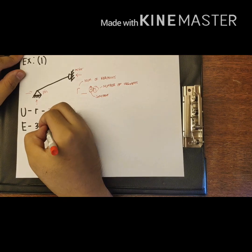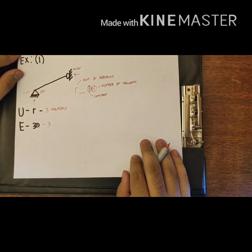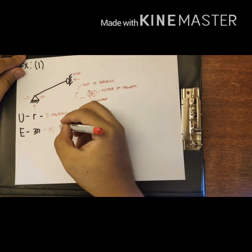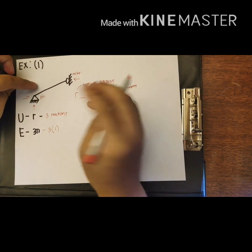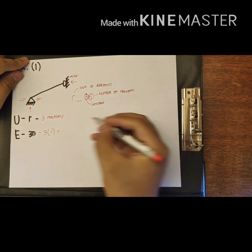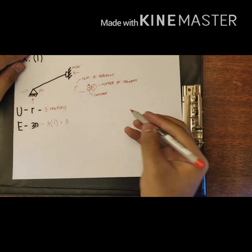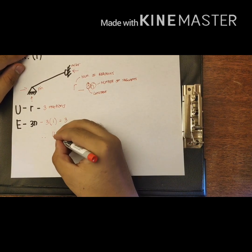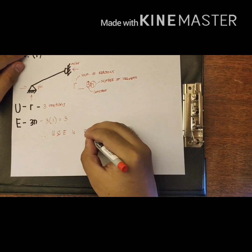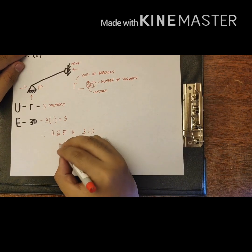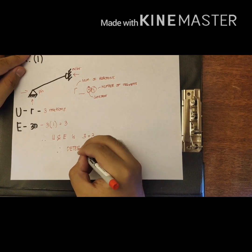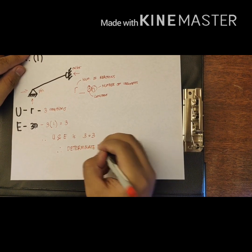For 3N, we have 3 as a constant multiplied by N, the number of segments of the beam. Since it is one straight beam, we have 1 segment. So 3 times 1 equals 3. Therefore, U and E are both 3, giving us 3 equals 3. This beam is therefore determinate.